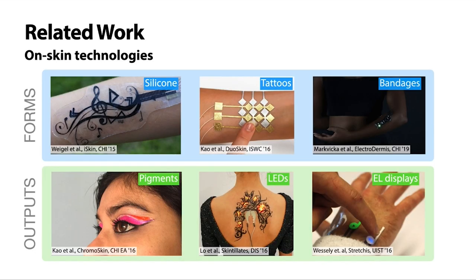Lotio draws inspiration from a rich body of work in on-skin technologies. Prior work has explored wearables in the form of silicone overlays, temporary tattoos, and bandages. Some interfaces have sensing capabilities, and others have built-in displays in the form of LEDs, thermochromic or environmentally reactive pigments, and electroluminescent displays.